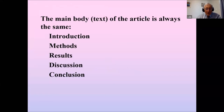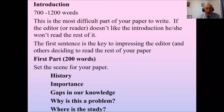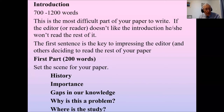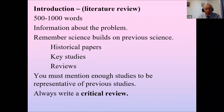The main body of the text is always the same: introduction, methods, results, discussion, conclusion, acknowledgements, and references. The introduction is the most difficult part of your paper to write because if the editor or reader doesn't like the first few sentences, they'll simply reject your paper. The first sentence is the key to impressing the editor. In about 200 words, outline the history of the topic, why it's important, what the gaps in knowledge are, and then provide a more detailed review.